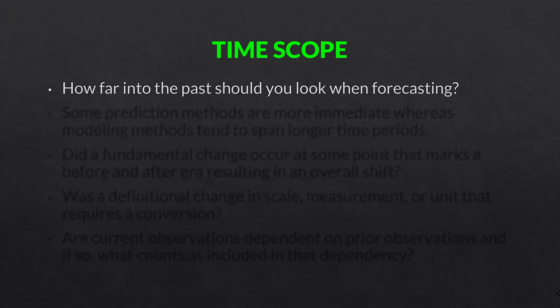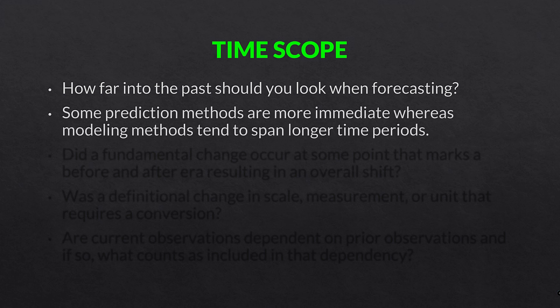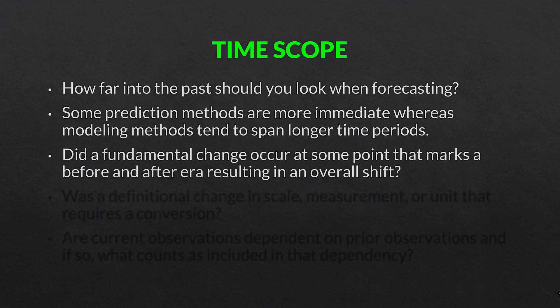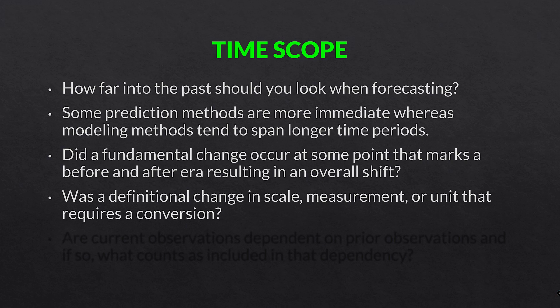Time scope. How far into the past should you look when forecasting, and how far is it necessary to look to get to your goal? Some prediction methods are more immediate, whereas modeling methods tend to span longer periods of time. Did a fundamental change occur at some point in time that marks a before-and-after era resulting in an overall shift in level? Events like pandemics, wars, terrorist attacks, or stock market crashes can fundamentally create a before-and-after effect that has to be taken into account.